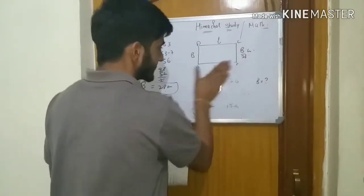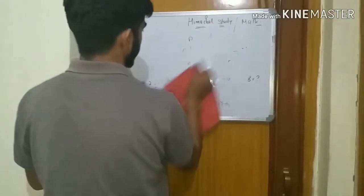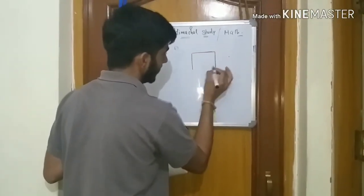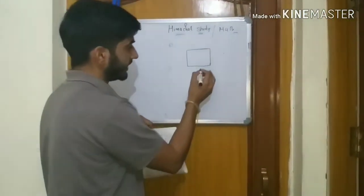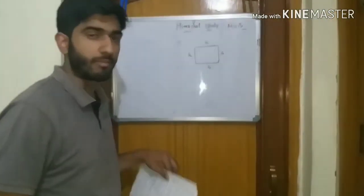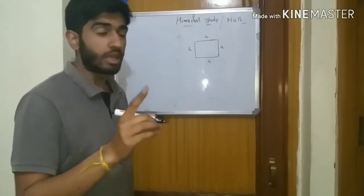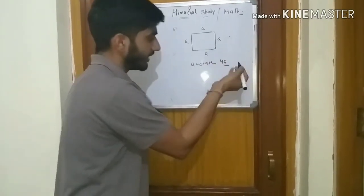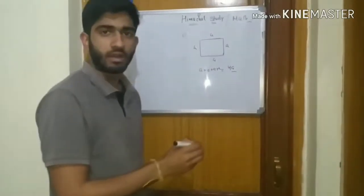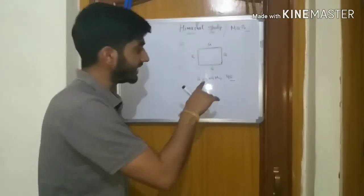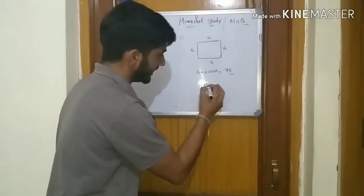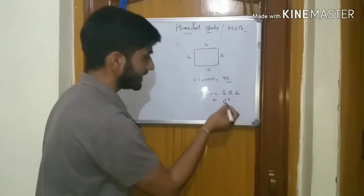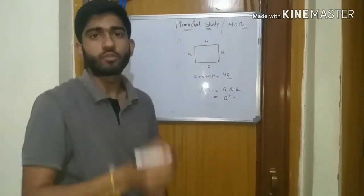Now, this is the square. In a square, all four sides are equal. The perimeter of a square is a plus a plus a plus a, which is 4a. For the area, it is length into breadth, which is a into a, giving us a squared.